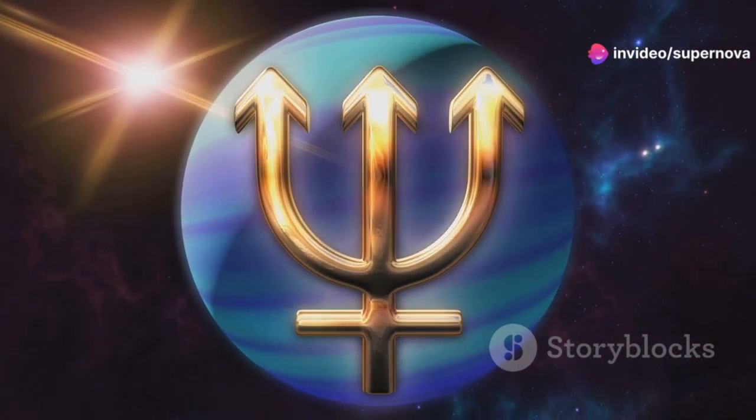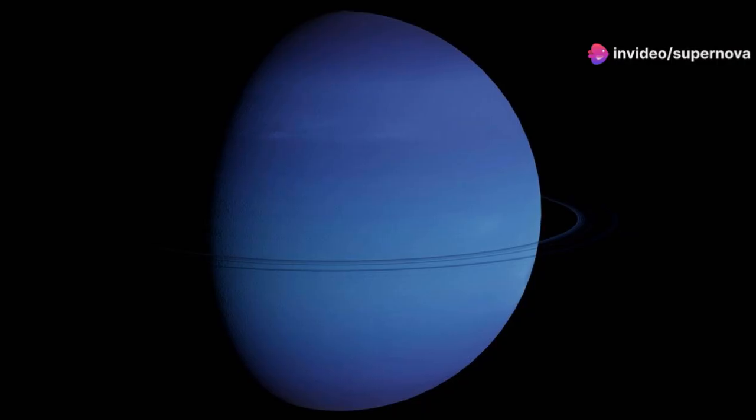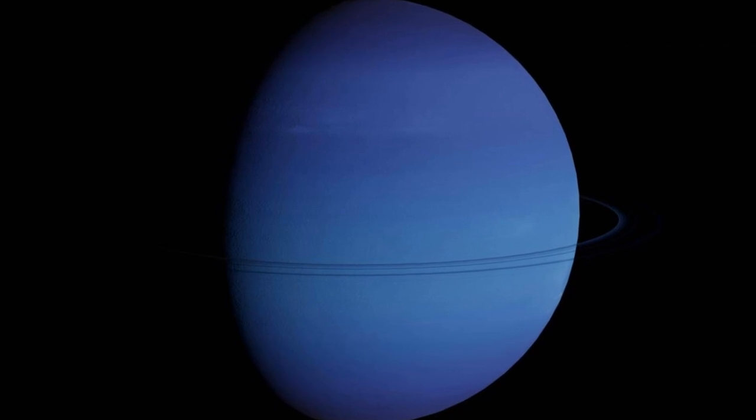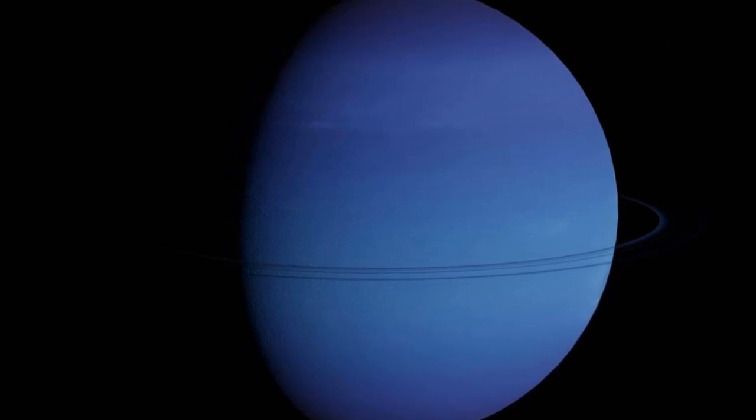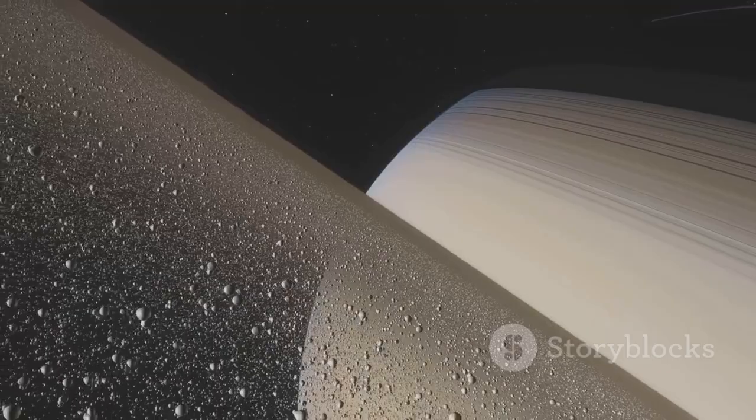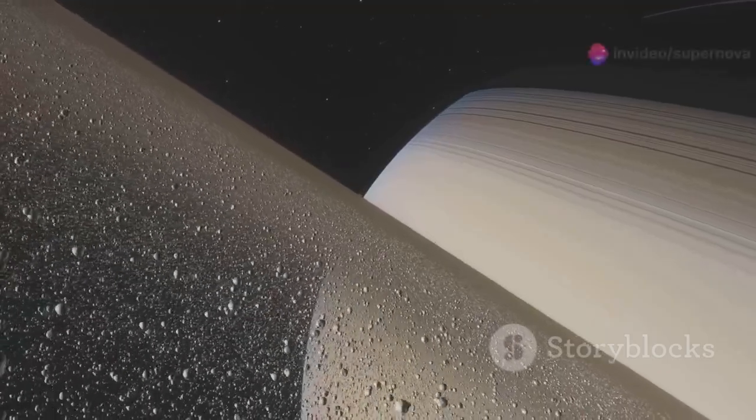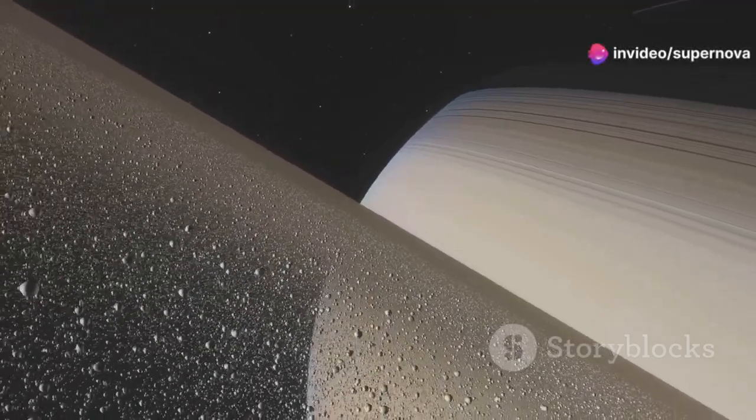JWST, with its sharp infrared vision, is allowing us to see Neptune in a new light. JWST has captured stunning images of Neptune, its rings, and its moons. The images show the planet's faint rings, made of dust and ice particles, in exquisite detail.